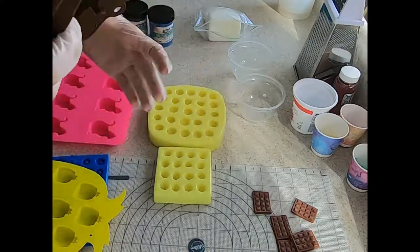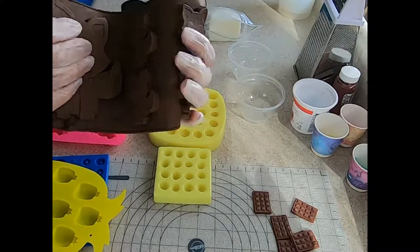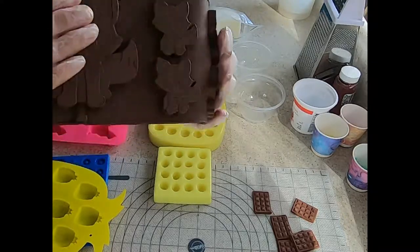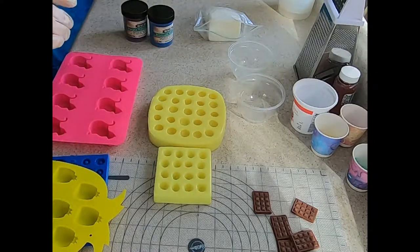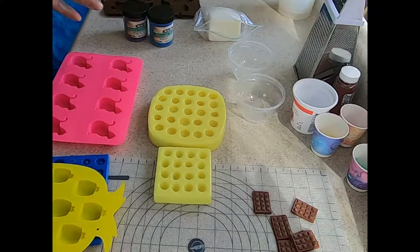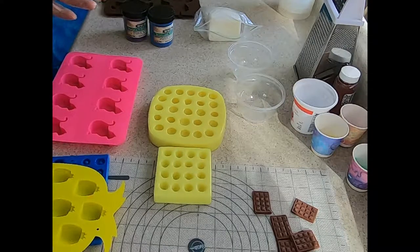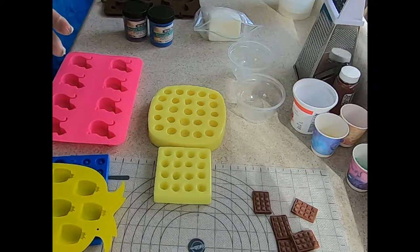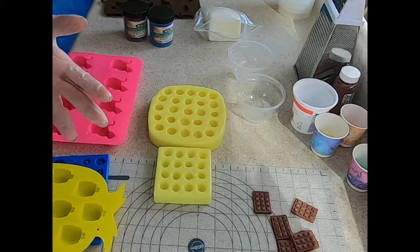But what you want to look for in a mold is that it is a slightly flexible silicone mold. Now there are molds out there that people made from any type of material. Like I said, molds aren't just for soap. They're for baking and candies.